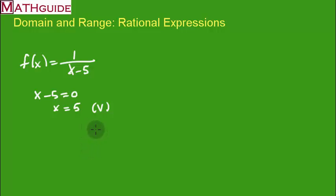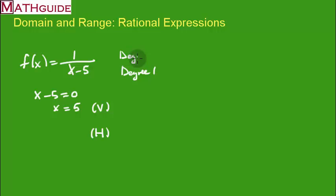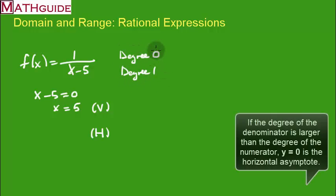Now the next step is to figure out the horizontal asymptote. To do that you compare degrees. The degree of the denominator is the highest power on x — here it's 1, so degree 1. In the numerator there are no x's, so it's degree 0. Since the degree of the denominator is larger than the numerator, the horizontal asymptote will always be y equals 0.